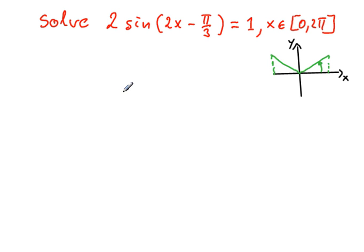All right, another linear trigonometric equation, 2 sine 2x minus pi over 3 is equal to 1.